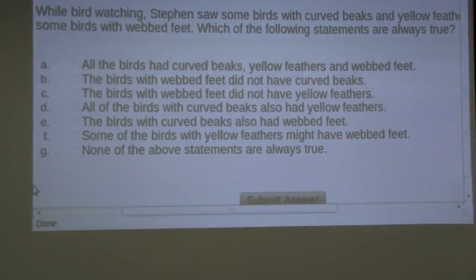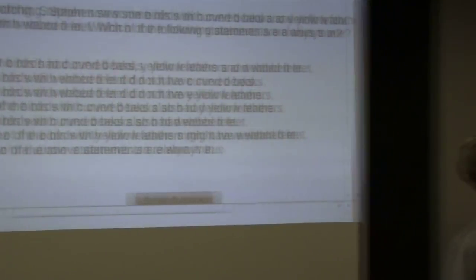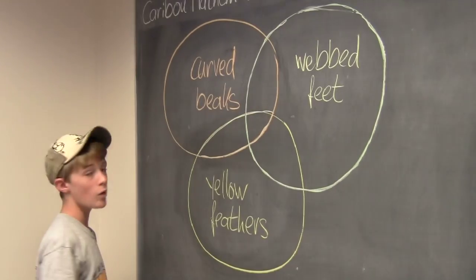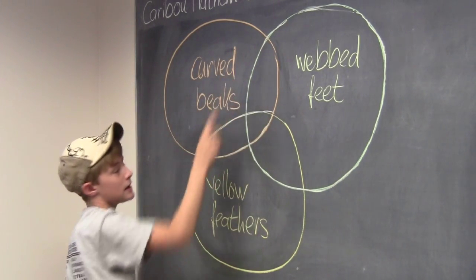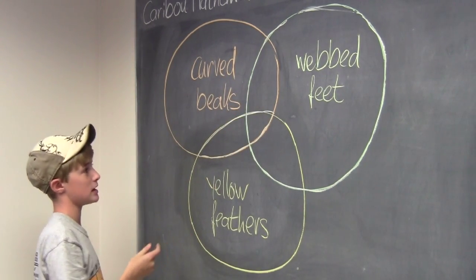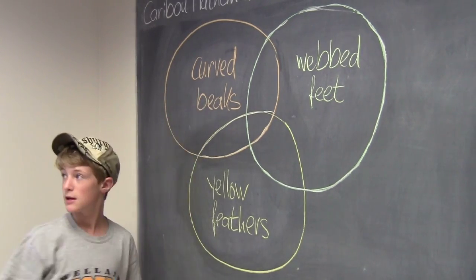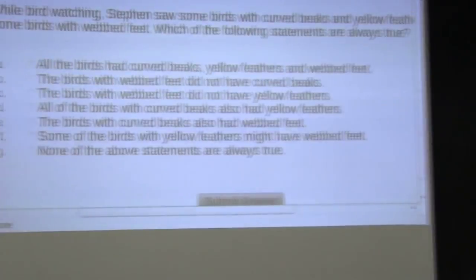So let's look at D now. All of the birds with curved beaks also had yellow feathers. That would be true if this part wasn't there, because that's still a possibility that there's birds with only curved beaks. So D would be false.